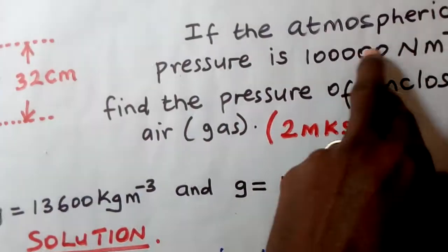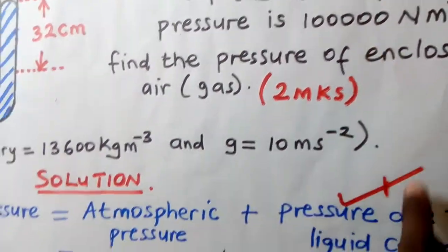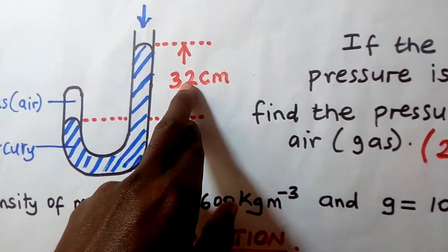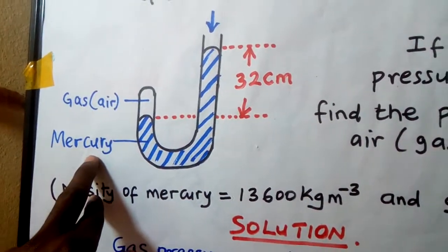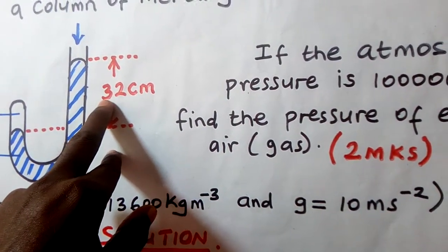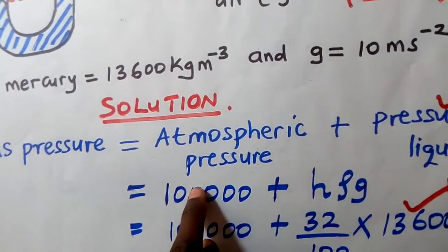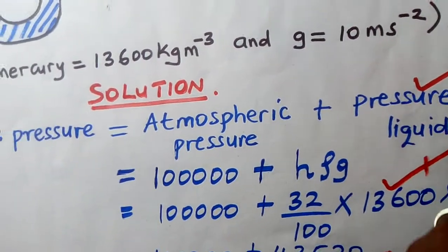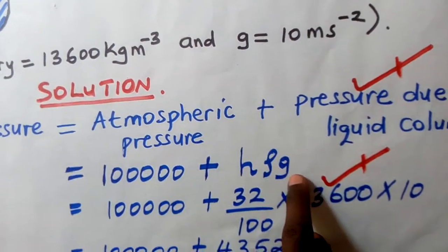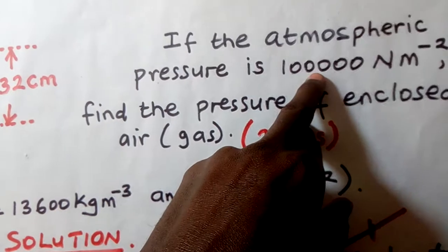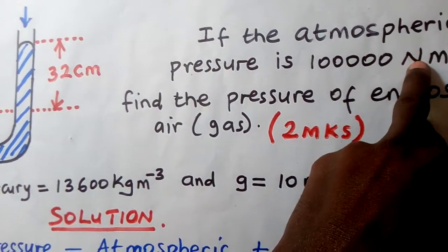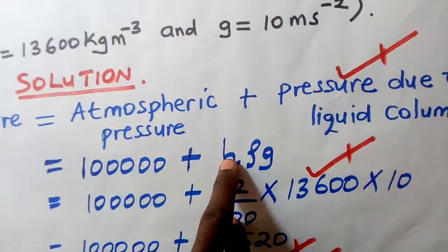The atmospheric pressure is given in newtons per meters squared. The pressure due to the liquid column is 32 centimeters, but this is in centimeters of mercury while atmospheric pressure is in newtons per meter squared. We cannot add them directly — we have to convert the 32 centimeters into newtons per meter squared first. To convert centimeters of mercury into newtons per meter squared, we apply the formula h×ρ×g.